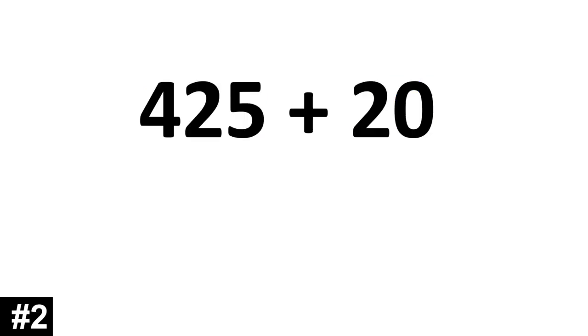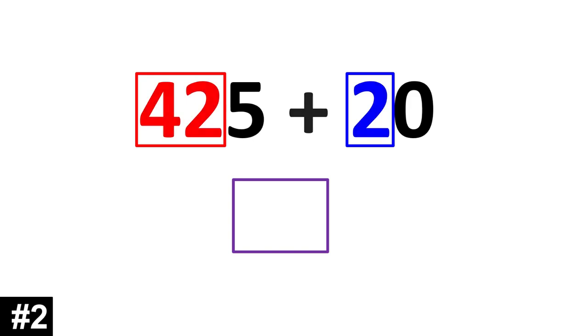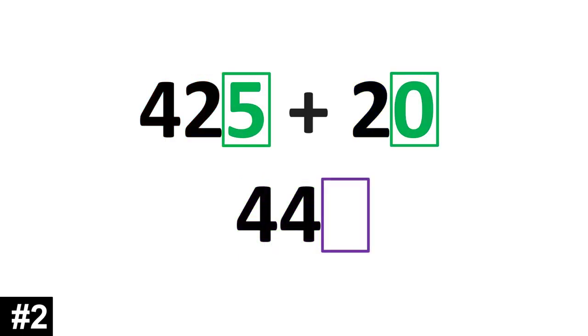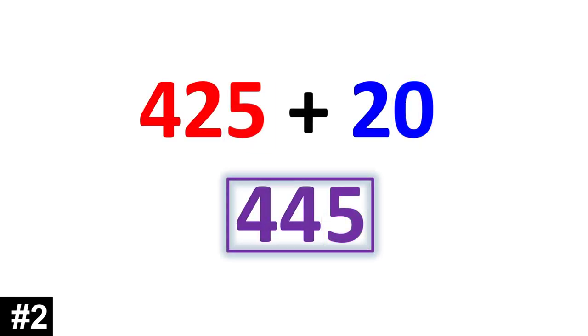Next example. 425 plus 20. 425 has 42 tens, and 20 has 2 tens. We add them together. 42 plus 2, 44. Now we look to the ones. 5 plus 0 is 5. So, 425 plus 20 is 445.